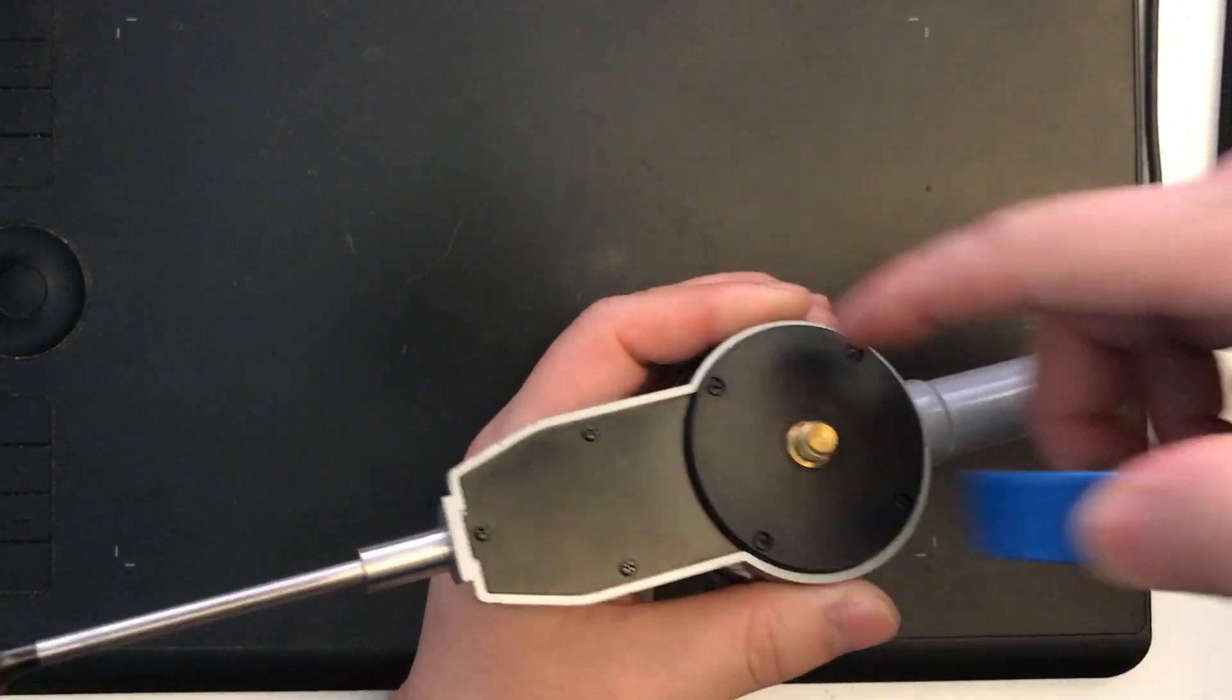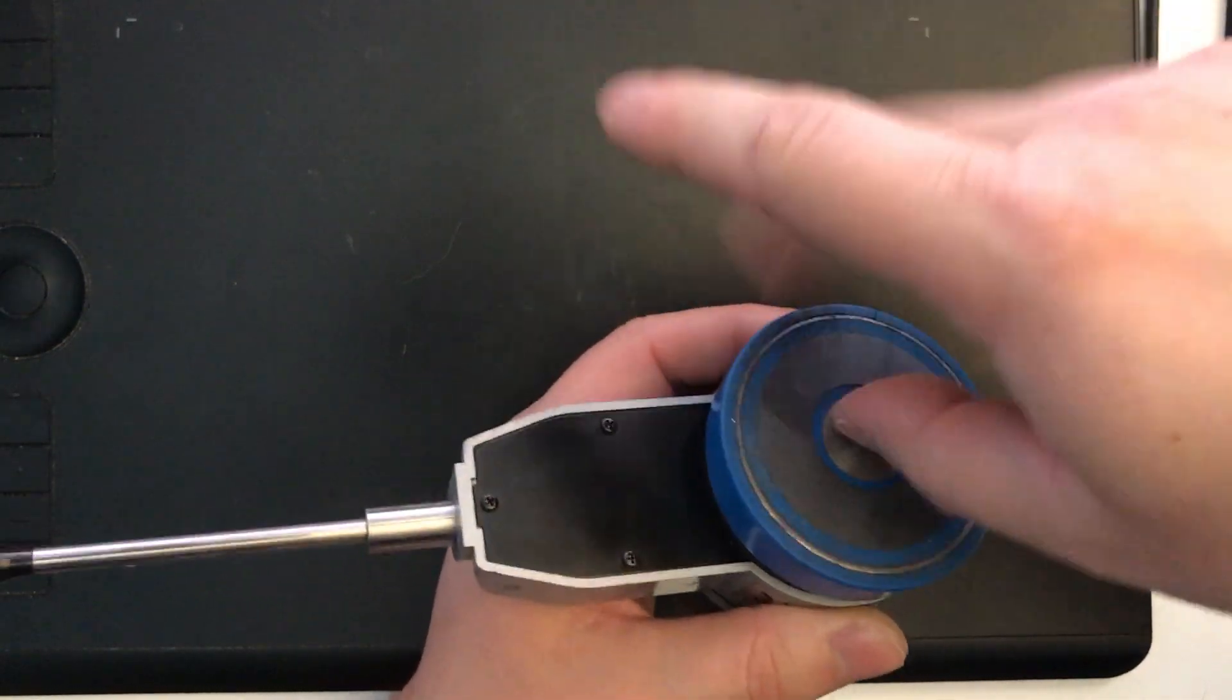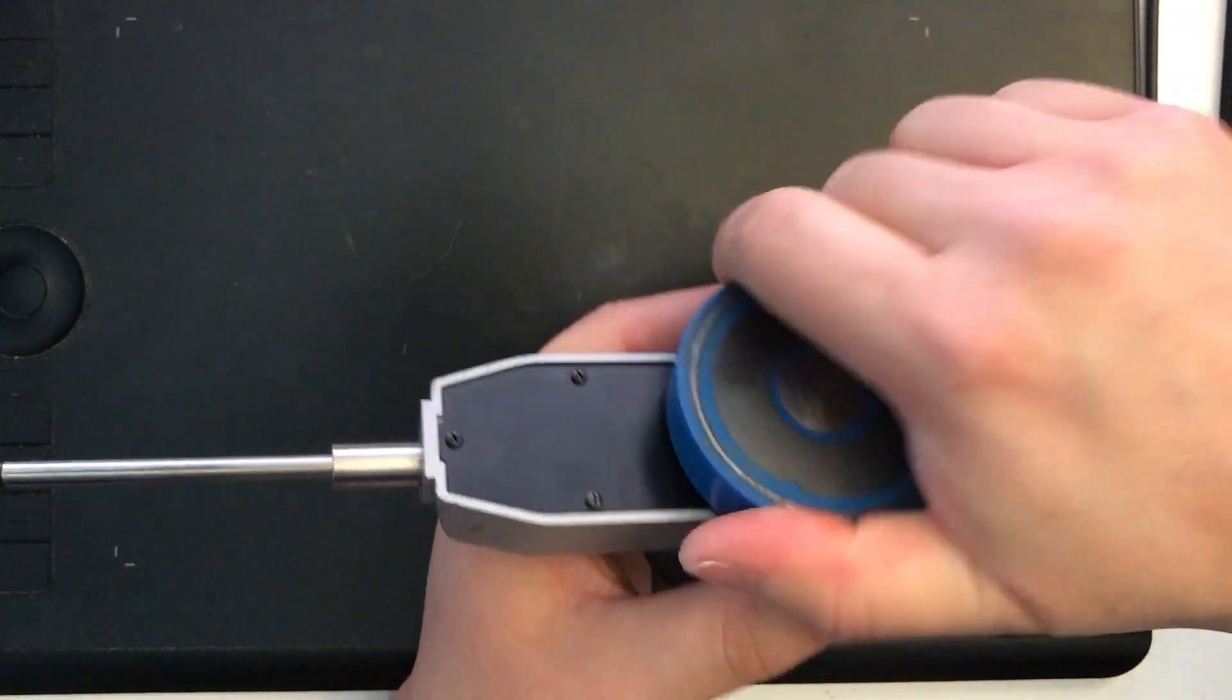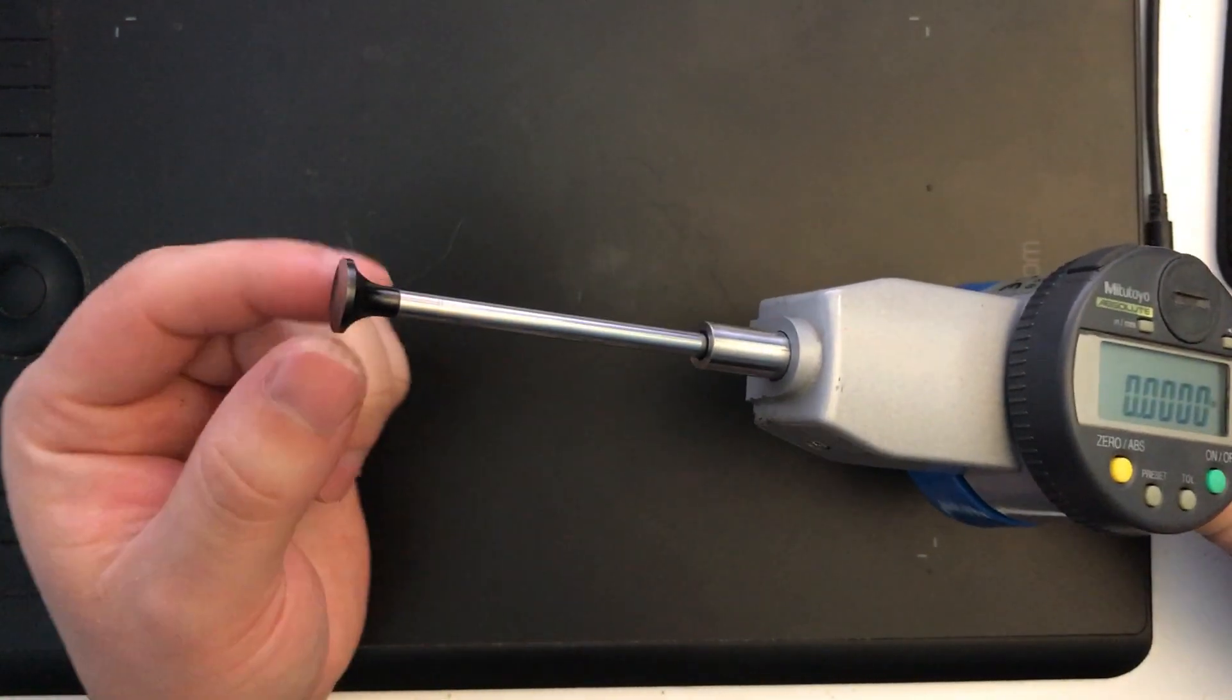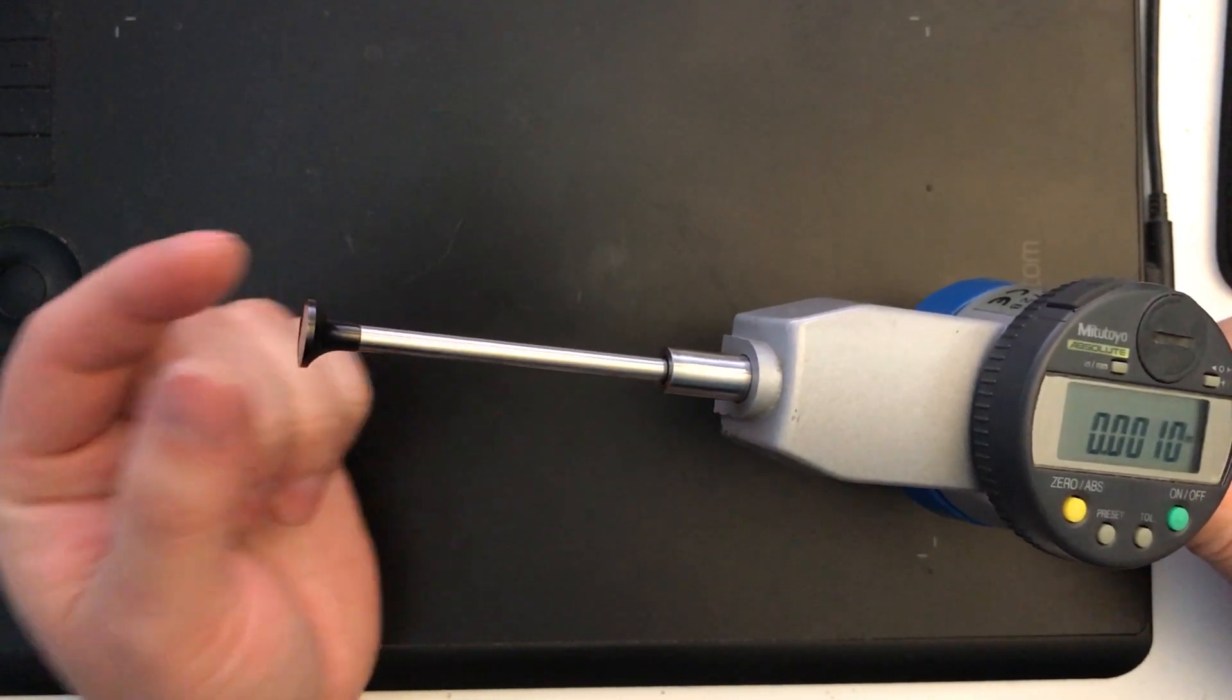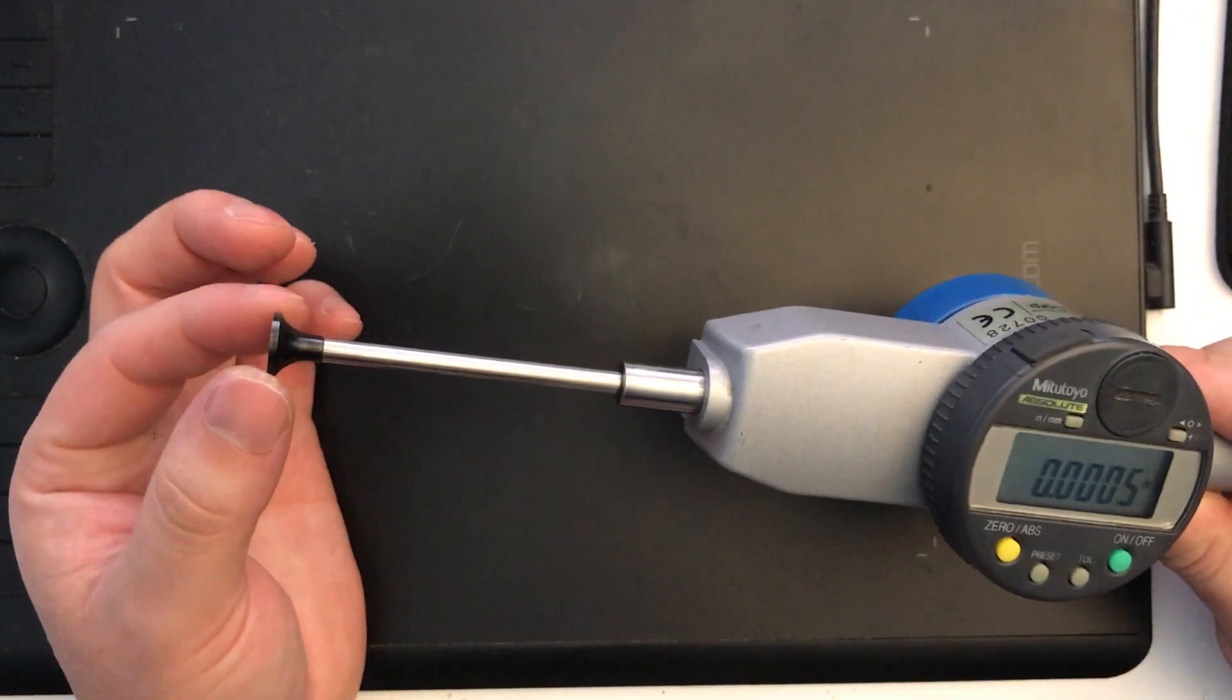But for me, the magnetic part is ideal, because I could just mount it to my lathe, and I'm good to go. It also came with this plunger attachment here, or tip, and so that saves me having to try and fabricate something to keep it from flipping off, and it's just great.